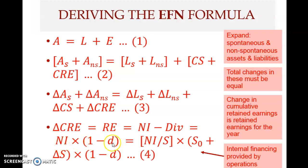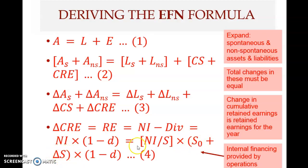Net income minus dividends can also be expressed as net income multiplied by one minus d, where d is the dividend payout ratio. We can expand this slightly: retained earnings equals net income divided by sales — which is the profit margin ratio — multiplied by S1, the new sales level, which is the current sales plus the change in sales.